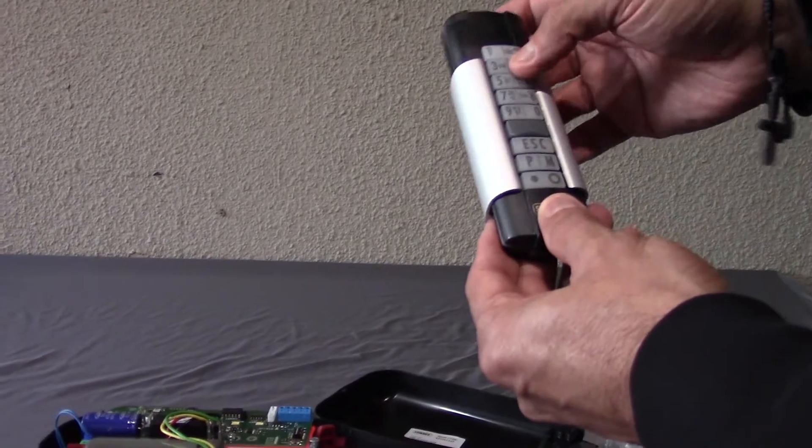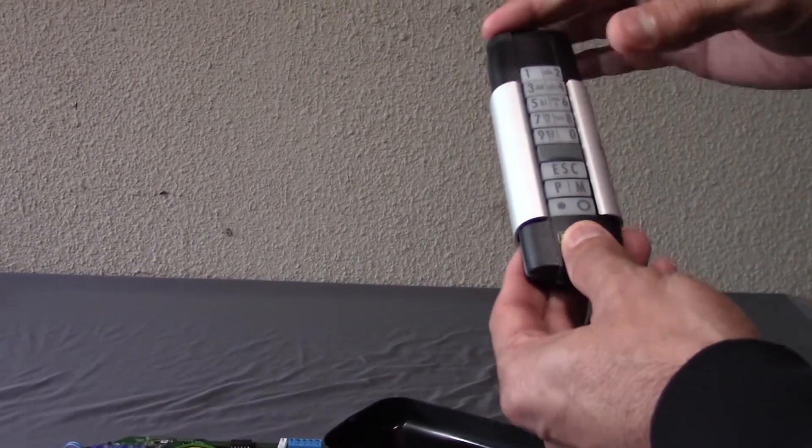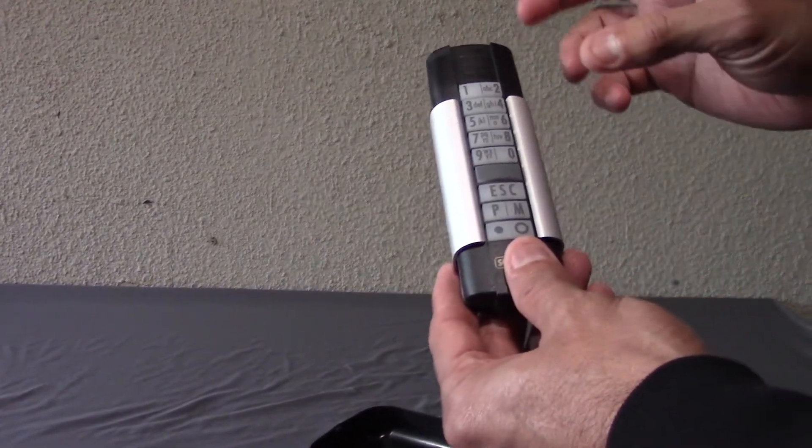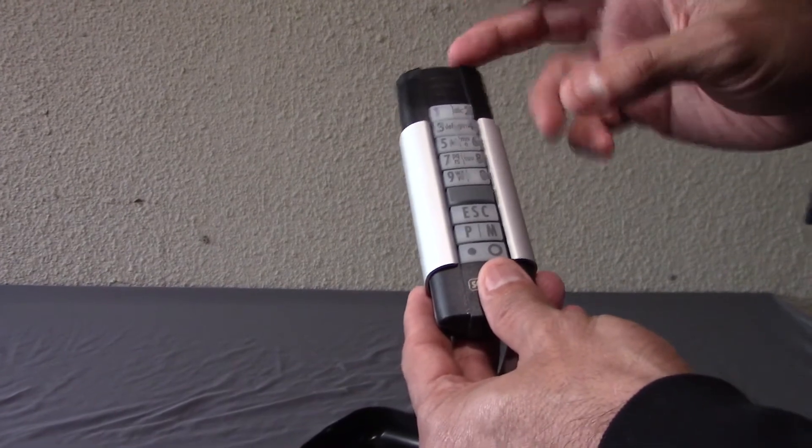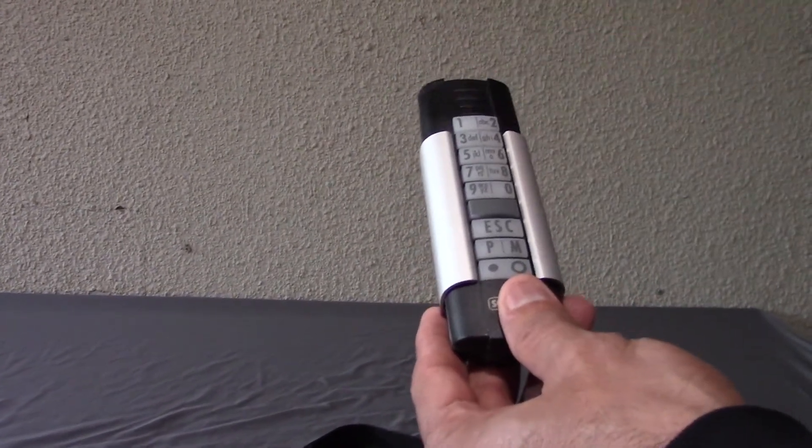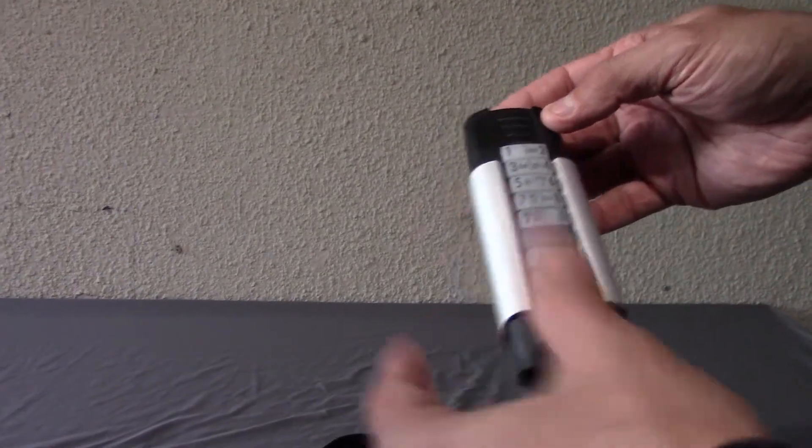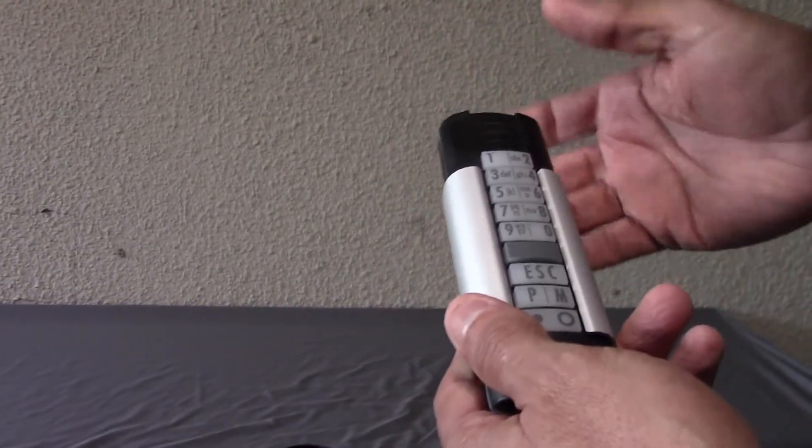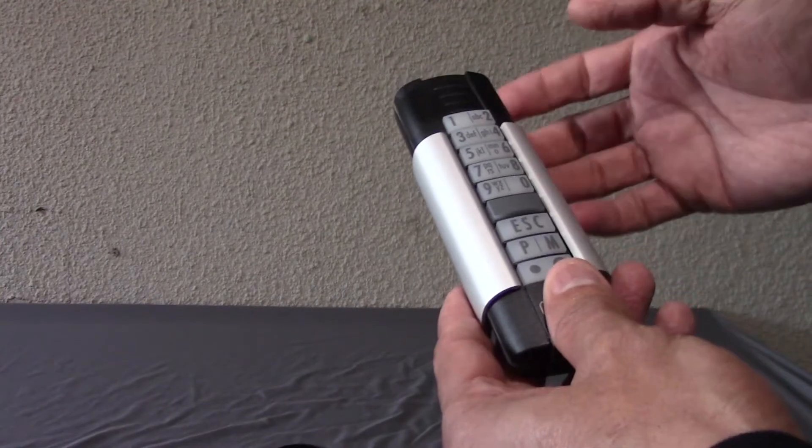Our keypads come turned off. If you press any button, nothing turns on. The reason we do that is because we have a battery life expectancy between six to eight years, and during shipping the battery can be discharged. This is how we extend the life of the battery.